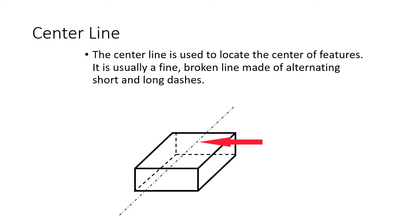Okay, a center line is another dashed line that you're going to run across. The center line is used to locate the center of features. It is usually a fine broken line made of alternating short and long dashes. So that's a center line. You'll see these a lot in circles. A center line will go through a circle, and then you can use it to dimension from the center of the circle to an edge.